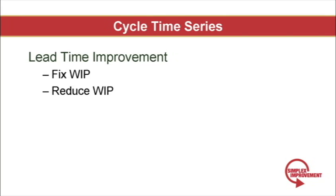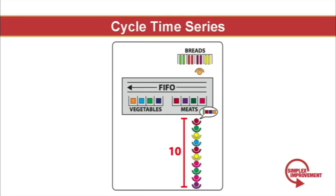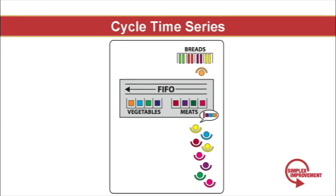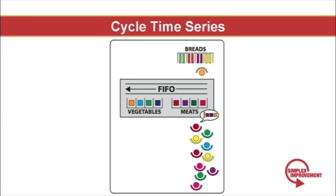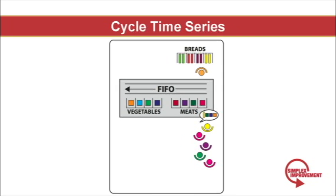So back to Little's Law and our question around the relationship between cycle time and lead time. In our example, the best way to decrease lead time is to fix, then reduce the number of people in line. If your line is constantly growing and shrinking, reducing cycle time may not have an impact on lead time.